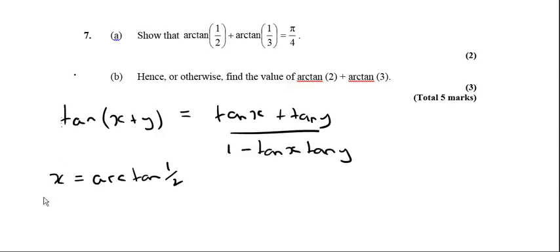We let x equal arctan(1/2). And this therefore means that tan x is equal to 1/2. So we're just basically taking tan on both sides. So tan x equals 1/2.